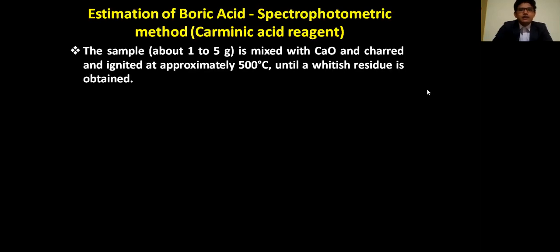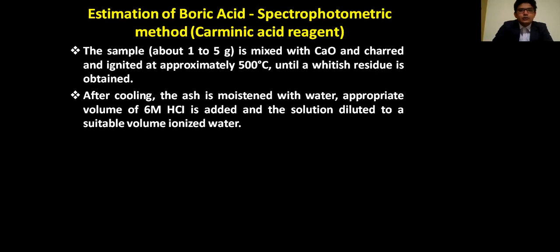First, about 1 to 5 grams of sample is mixed with calcium oxide, charred, and ignited at approximately 500 degrees centigrade until a whitish residue is obtained. After cooling, the ash is moistened with water and an appropriate volume of 6 molar acid is added, then the solution is diluted with a suitable volume of deionized water.